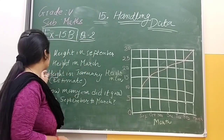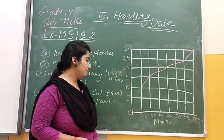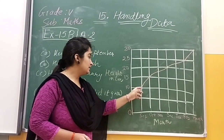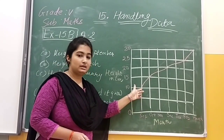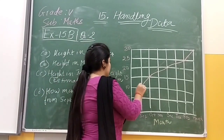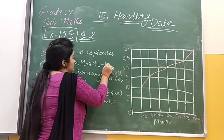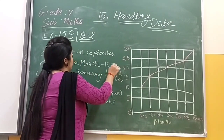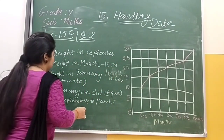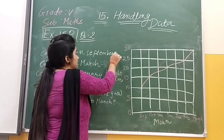The first question is: height in September. September mein iska height kitni thi? Rose plant ki — that is 10. 10 pe yahan pe humein dikh raha hai, that will be 10 centimeter.